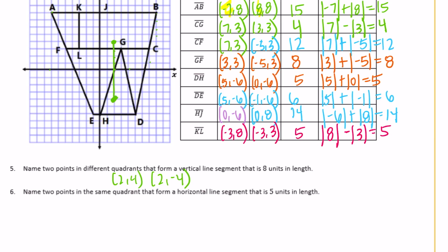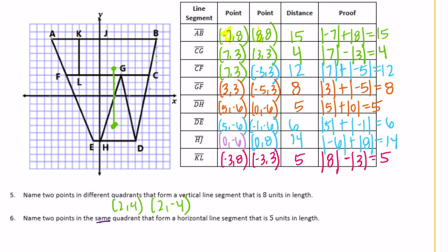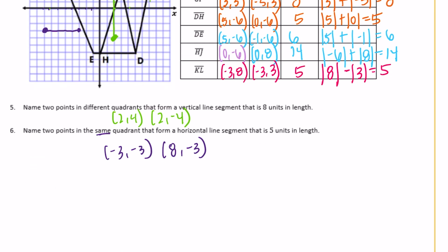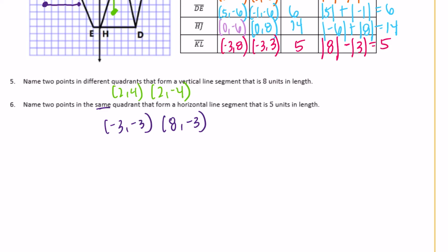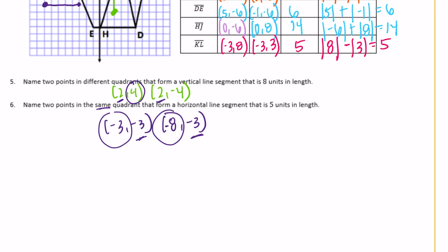Then name 2 points in the same quadrant that form a horizontal line segment that is 5 units in length. I'll draw a horizontal line 5 units long in the same quadrant: negative 3, negative 3 and negative 8, negative 3. You could also do this without drawing — just make sure your y-coordinates are the same and your x-coordinates are 5 units apart. For the vertical one, make sure your x-coordinates are the same and your y-coordinates are 8 units apart.